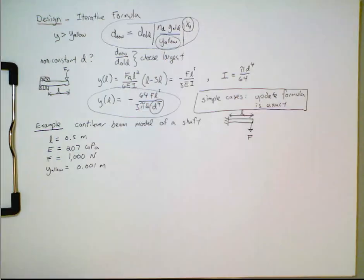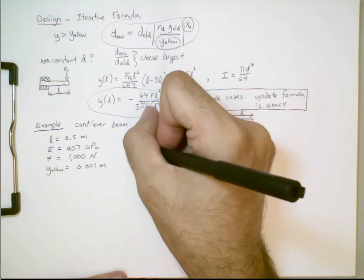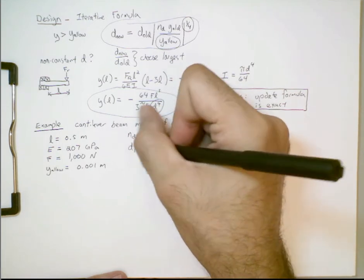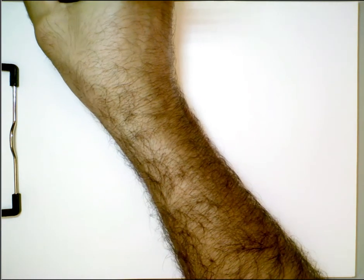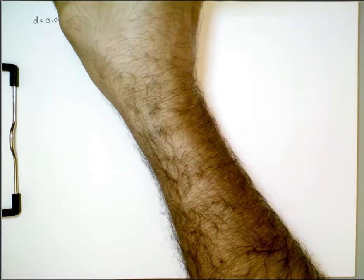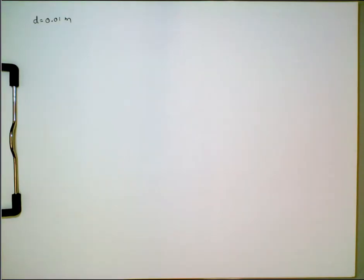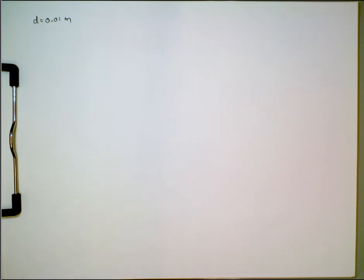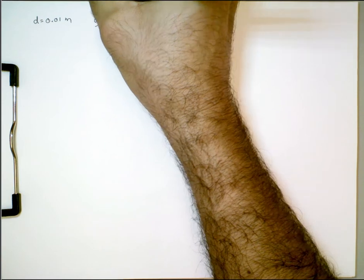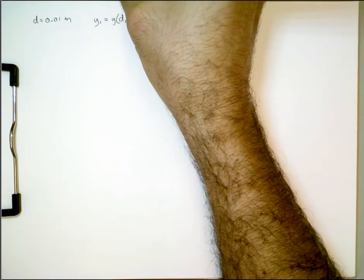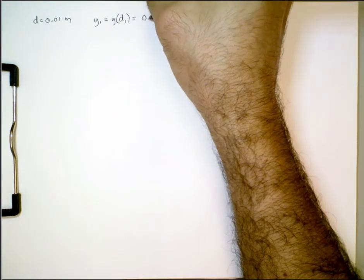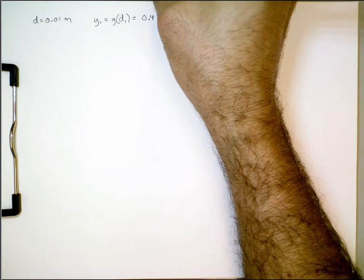Let's also say that the design factor here is just going to be one. And let's make an initial guess for the diameter. Let's say we're going to guess 10 millimeters, or one centimeter. If one centimeter is our initial guess for the shaft diameter, let's find out what the maximum deflection is. If we use the formula that we just went through, our deflection y_1, or in other words, the deflection as a function of d_1, if we plug in the numbers for that, we're going to end up with a deflection of 0.41 meters.